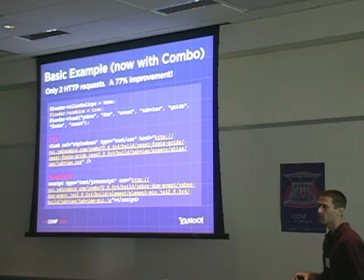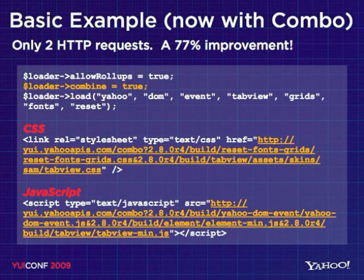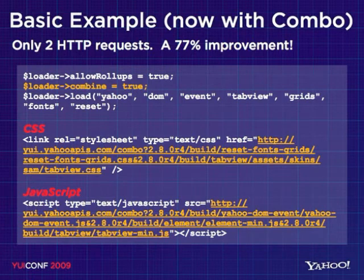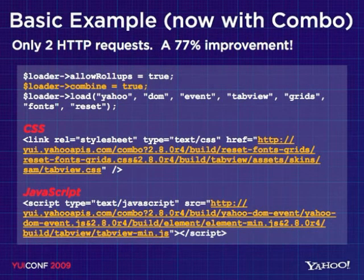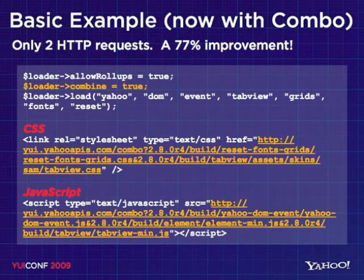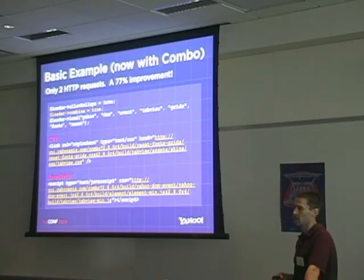Revisiting our basic example but now with combo: allow_rollups is true (the default), and we add combine equals true. Loading the same set of modules, we now get just two HTTP requests — down from nine, a 77% improvement. You can see we've got the rollup files — two different resources combined into one. One request gives us reset-font-grid and yahoo-dom-event aggregate files, and another gives us element and tab view. Two requests give us all the functionality we need.